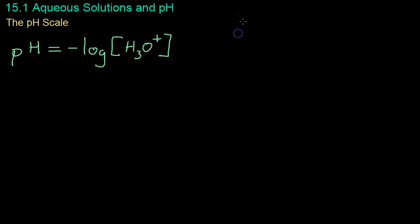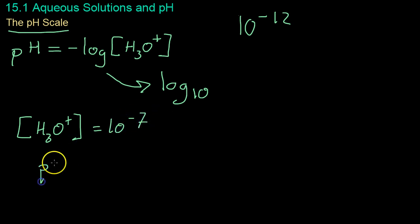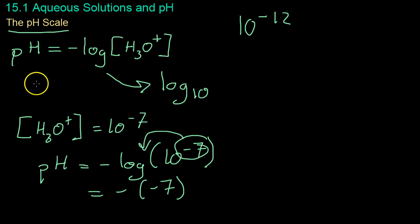Because these concentrations are really small, like 10 to the minus 12, chemists developed a scale that uses more reasonable numbers, and they called it the pH scale. The pH scale is defined as the negative log of the concentration of hydronium. A log without any number down here is a log base 10. For example, if we take neutral water, which has a hydronium content of 10 to the negative 7, we'd set the pH equal to the negative log of 10 to the negative 7. This becomes negative of negative 7, and you get a pH of 7 for neutral water.